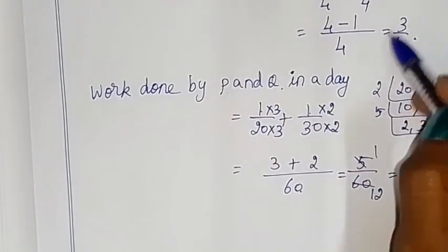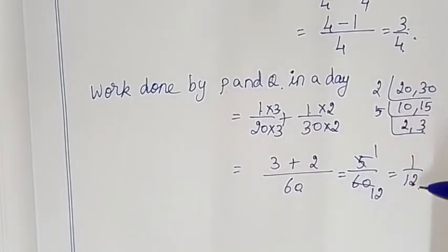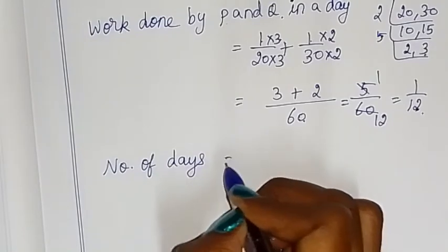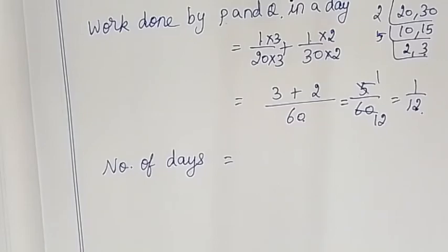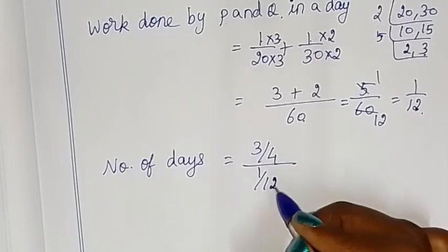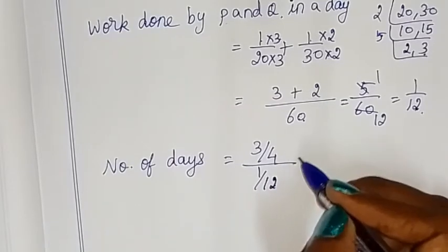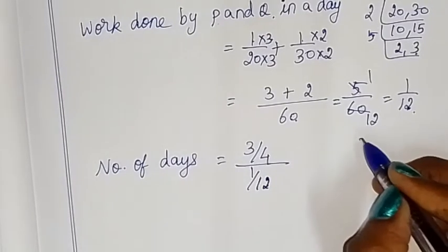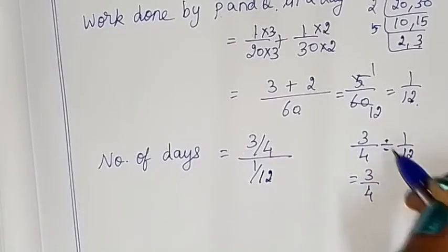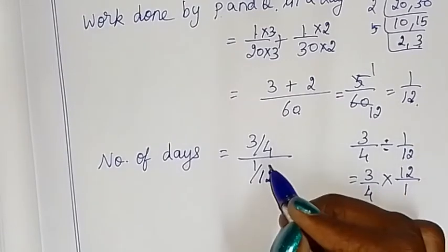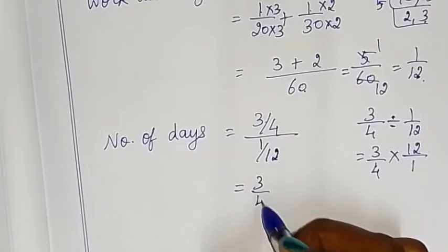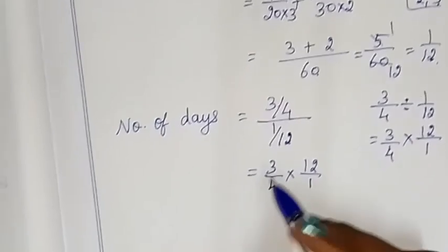If total work is needed, we know that 1 day work is 1/12, so number of days equals total work divided by 1 day work. So 3/4 equals total work divided by 1/12. Fraction division: 3/4 divided by 1/12 equals 3/4 into 12/1, which gives us 9.